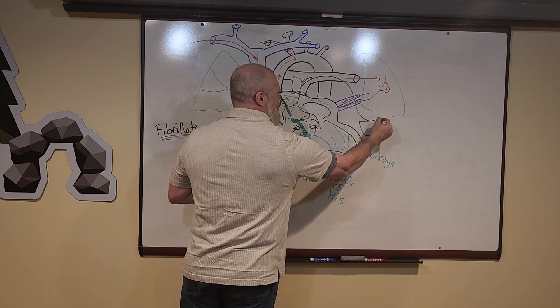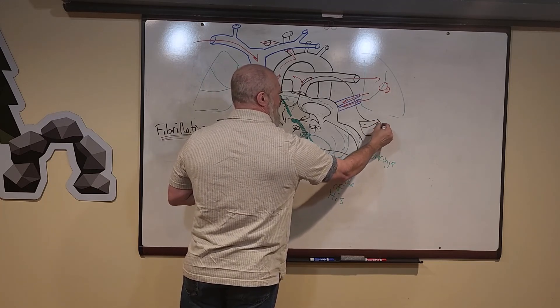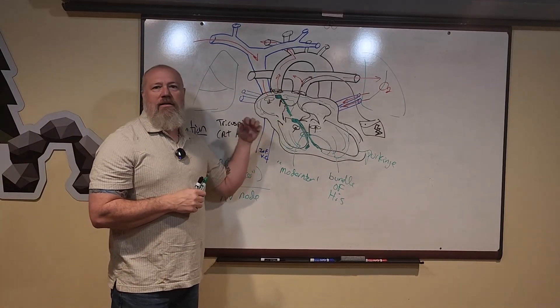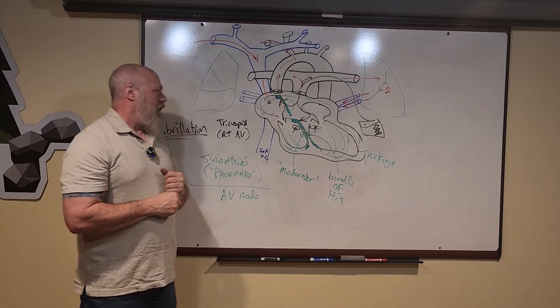So you've got an artificial pacemaker. The leads will head into your heart and just override the natural pacemakers, the SA and AV nodes.